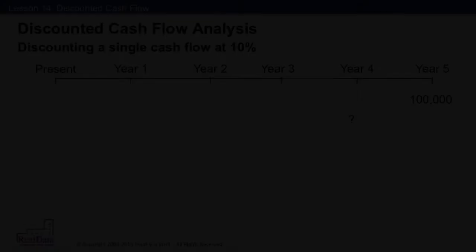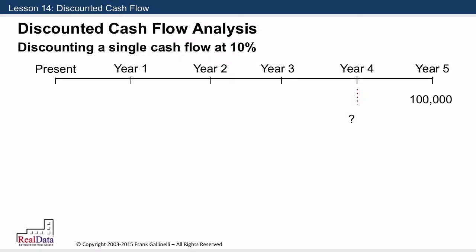Well, if you recall our example of waiting one year to receive $100,000, you'll see that we can go out to year four here and say, okay, how much would I have to have in year four for it to grow at 10% to $100,000 in year five? Well, the answer to that question is $90,909.09. If you took that $90,909 and increased it by 10%, it would equal $100,000.